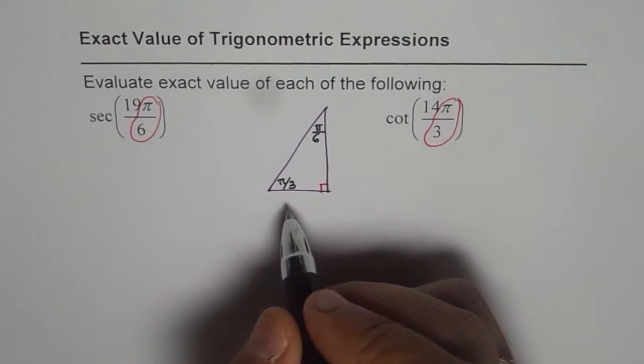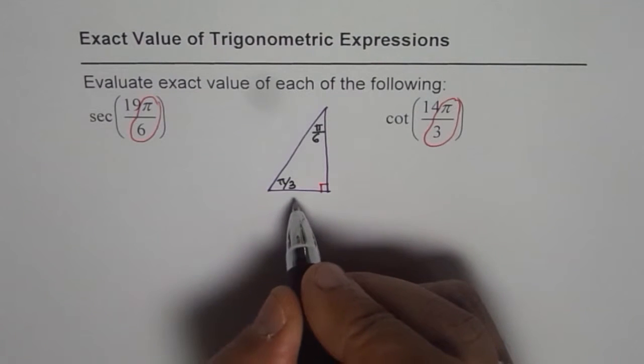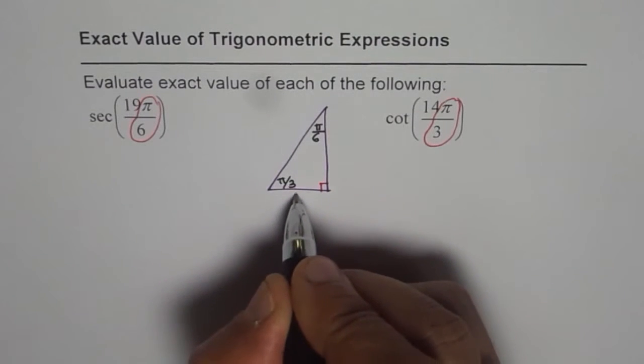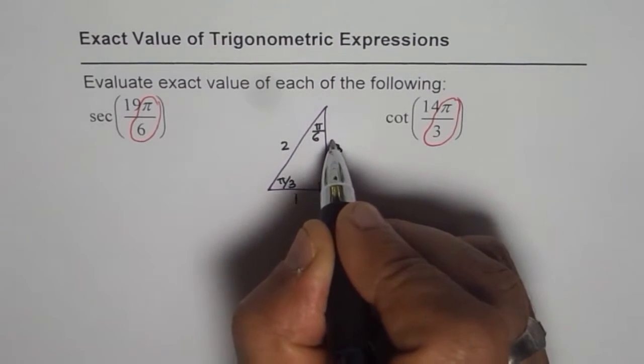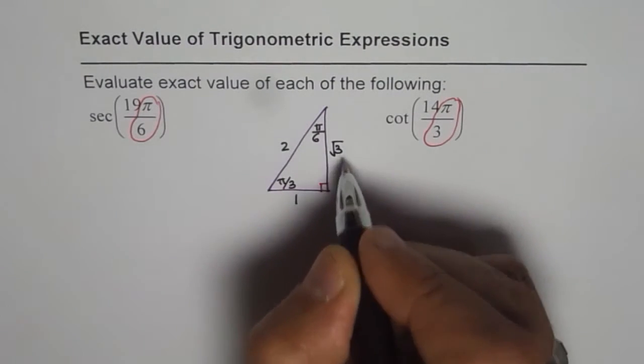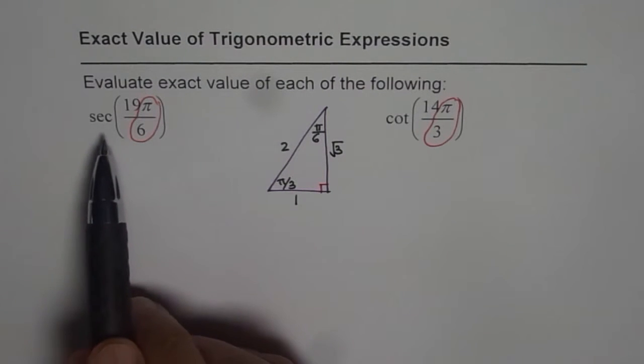And in this special triangle, ratio of the sides is if the base is 1, hypotenuse is 2 and this side is square root of 3. 2 square minus 1 square root. Now let us look into each trigonometric expression.